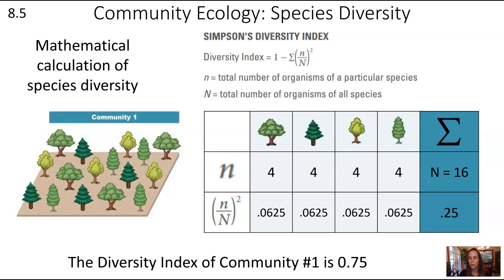Because all of these are the same, we get the same value for each. For each tree type, you calculate 4 divided by 16, squared, giving 0.25 when you add those up. The diversity index formula is 1 minus the sum of (n/N) squared, so the diversity index of community 1 is 0.75.